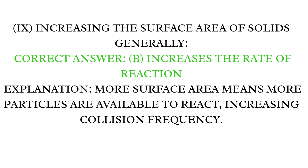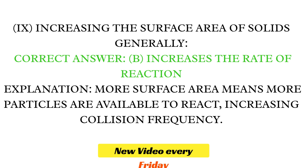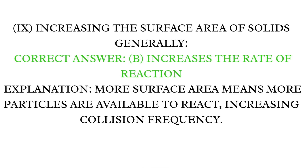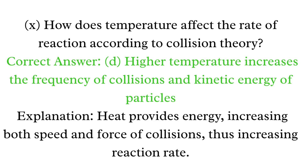MCQ 9: Increasing the surface area of solids generally. Correct answer: B — Increases the rate of reaction. Explanation: More surface area means more particles are available to react, increasing collision frequency.